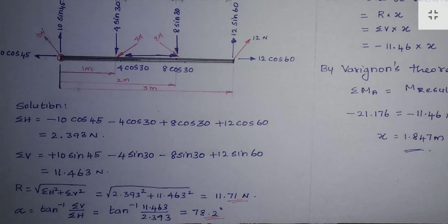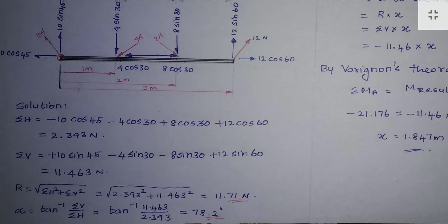Similarly, we add all vertical components for sigma-V. For vertical forces, upward is positive and downward is negative. The first vertical force, 10 sin 45, is upward — positive. The force 4 sin 30 is downward — negative. And 8 sin 30 is also downward — negative. The force 12 sin 60 is upward — positive. Adding these, we get a positive value for sigma-V.